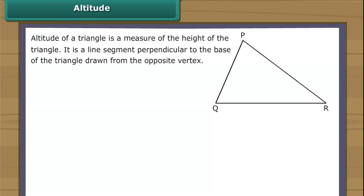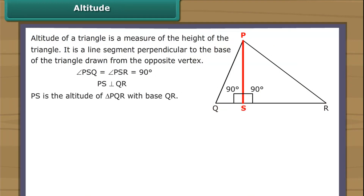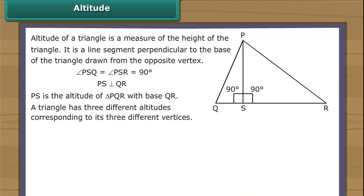The altitude of a triangle is a measure of the height of the triangle. It is a line segment perpendicular to the base of the triangle, drawn from the opposite vertex. In the figure, line segment PS is a perpendicular drawn from vertex P to the base QR. It intersects QR at right angles; therefore, PS is the altitude of triangle PQR with base QR. A triangle has three different altitudes corresponding to its three different vertices.